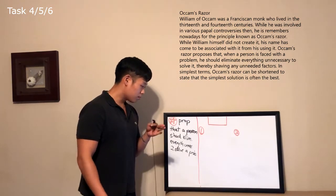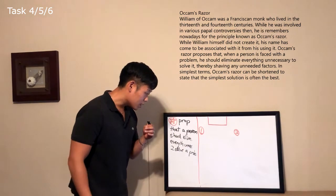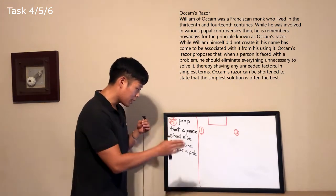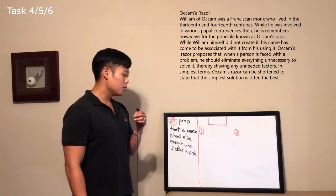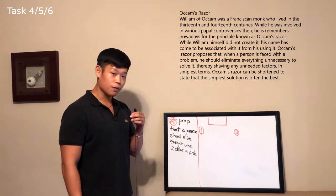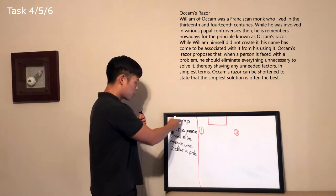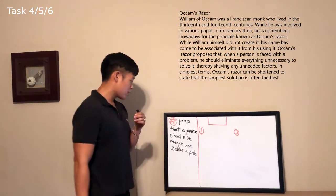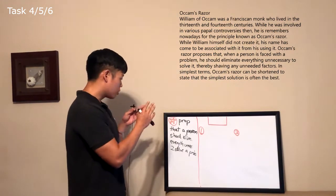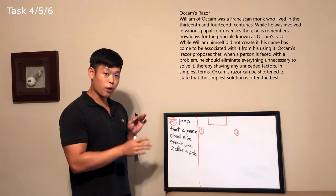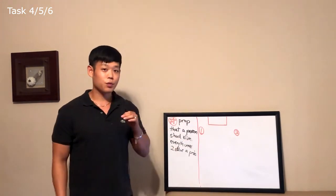It's in the third line, in the second sentence, and also in the fourth line. It says: Ocam's Razor proposes that when a person is faced with a problem, he should eliminate everything unnecessary to solve it. So Ocam's Razor proposes that a person should eliminate everything unnecessary to solve a problem — that's the definition. If you took notes on something like this, with no grammar mistakes and no misunderstandings, you don't even have to read the rest.